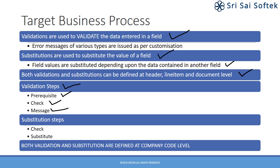Substitution steps are twofold. First, check the data entered in a particular field and substitute with a defined value in another field. The validations and substitutions are very useful in helping the data entry of the users. Both validations and substitutions are defined at company code level.